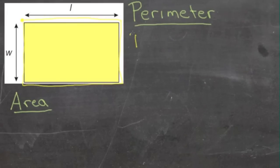There's a formula that looks like this: P for perimeter equals L plus W plus L plus W. We can simplify that a little bit by grouping the L's and the W's together, which gives us P equals two L's plus two W's.